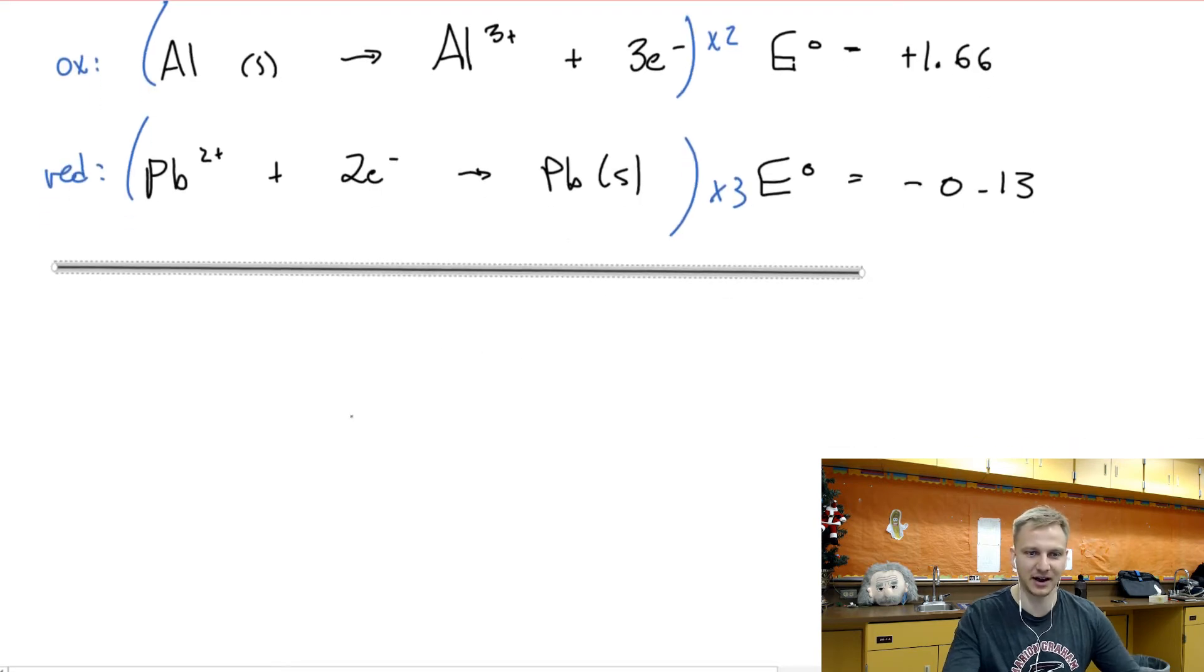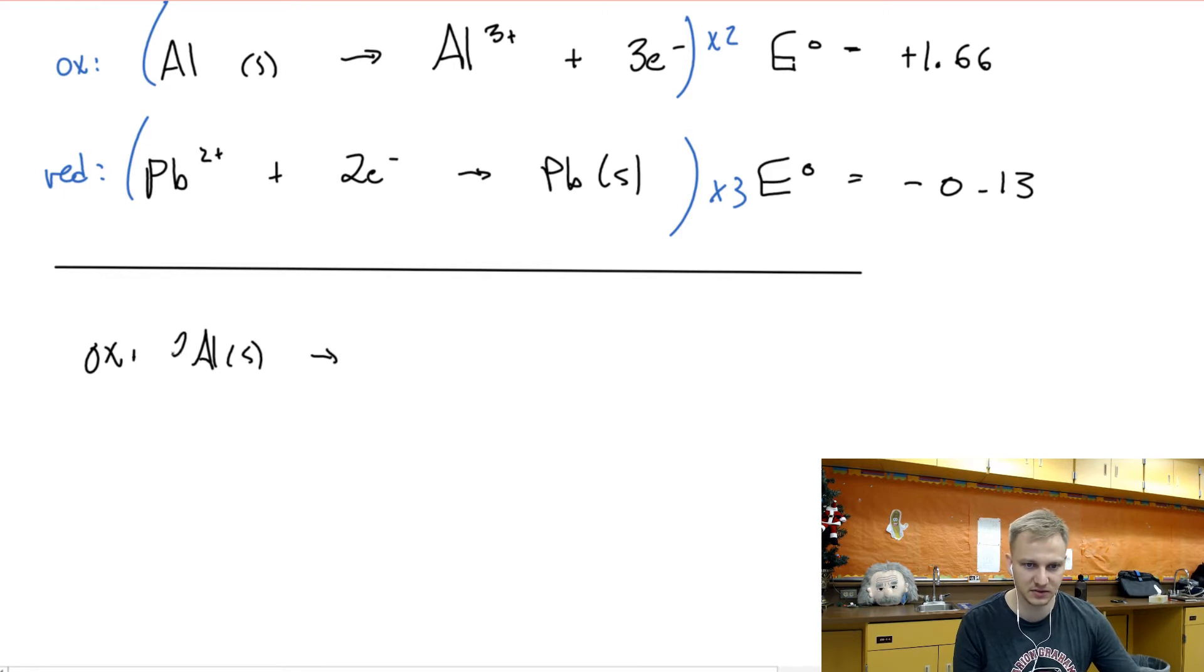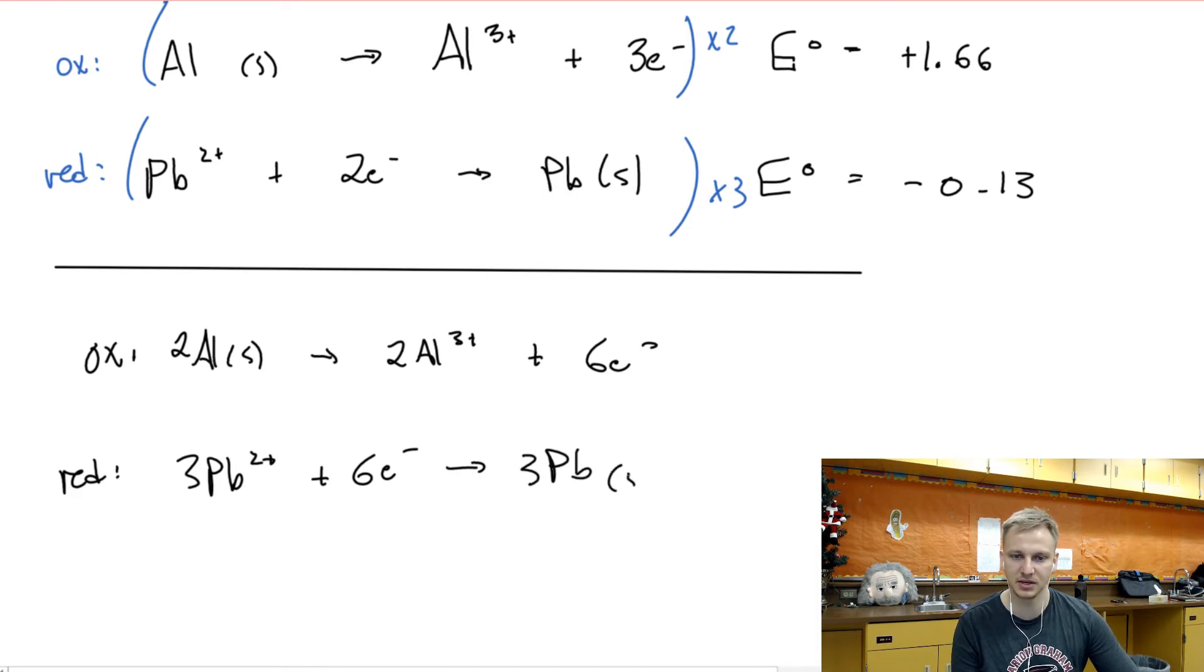So now we have our new oxidation reaction. Al solid reacts to produce, and that will be two of these, reacts to produce two Al three plus plus six electrons. Plus six electrons. And then our bottom, our reduction reaction, we now have three PB2 pluses plus six electrons reacts to produce three PB solids.